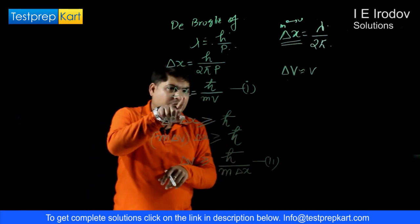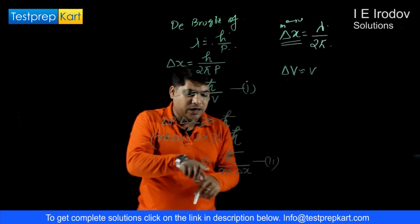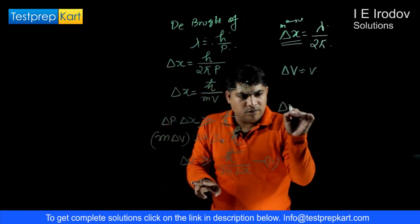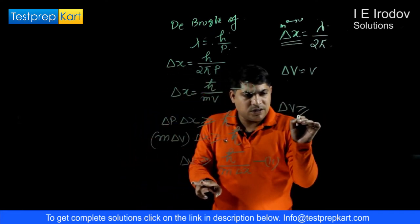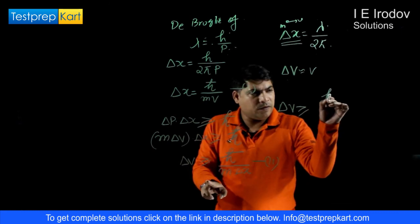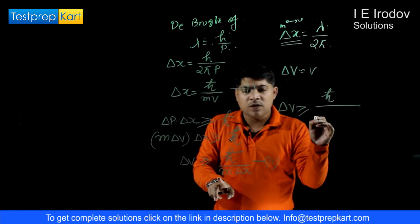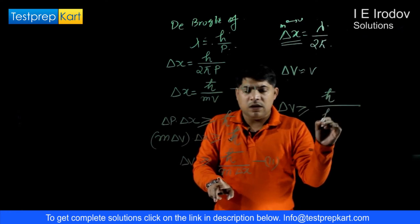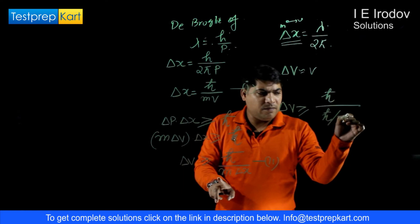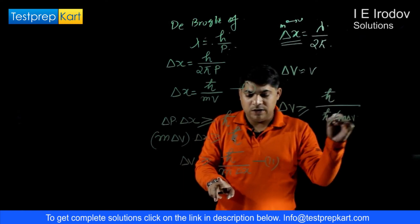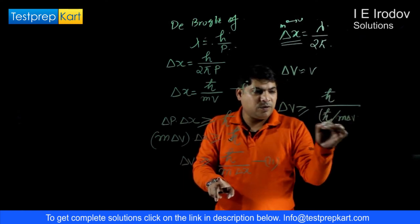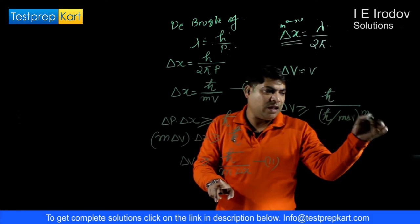If we replace this delta x from equation number 1, then we get delta v must be greater or equals to h bar divided by m times h bar over m v, which simplifies with the positive value of delta x and m.